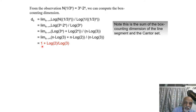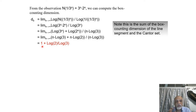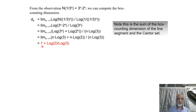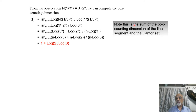So what do we conclude? If you multiply two objects and calculate the dimension of the resultant object, the dimension is the sum of the individual dimensions. Here, 1 was the dimension of the line and log 2 / log 3 was the dimension of the Cantor set — so the result is the sum of the box counting dimensions of the line segment and the Cantor set.